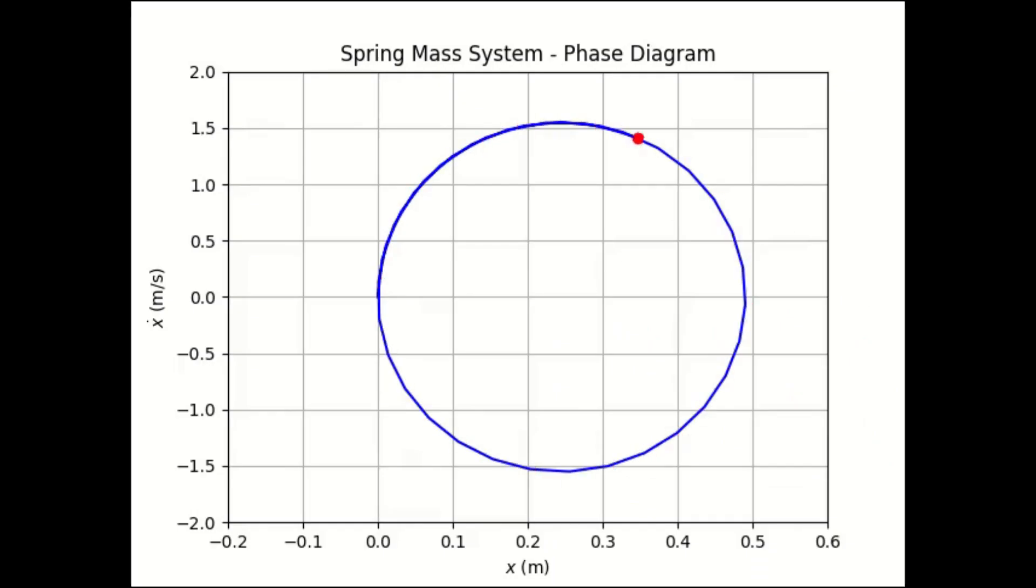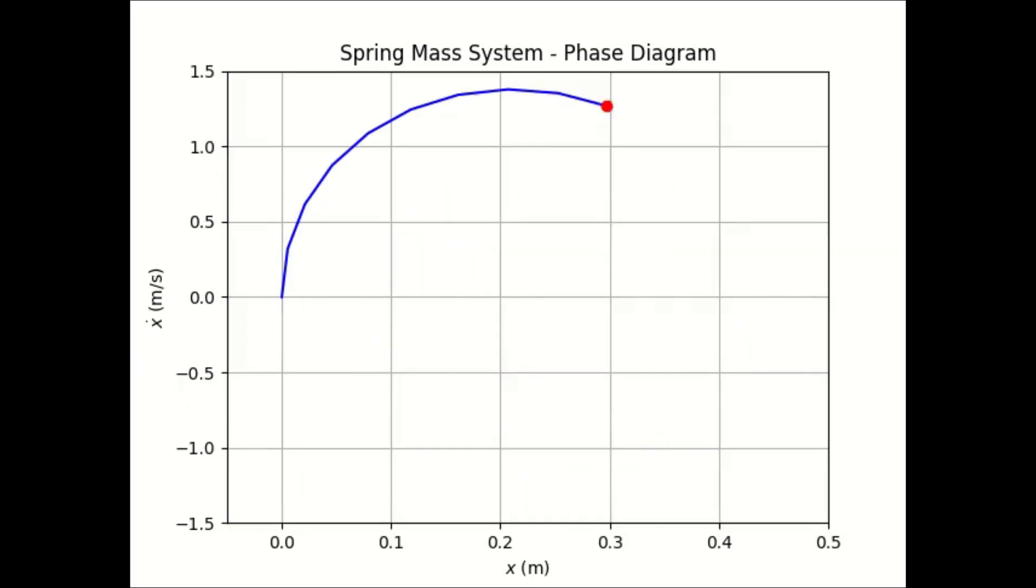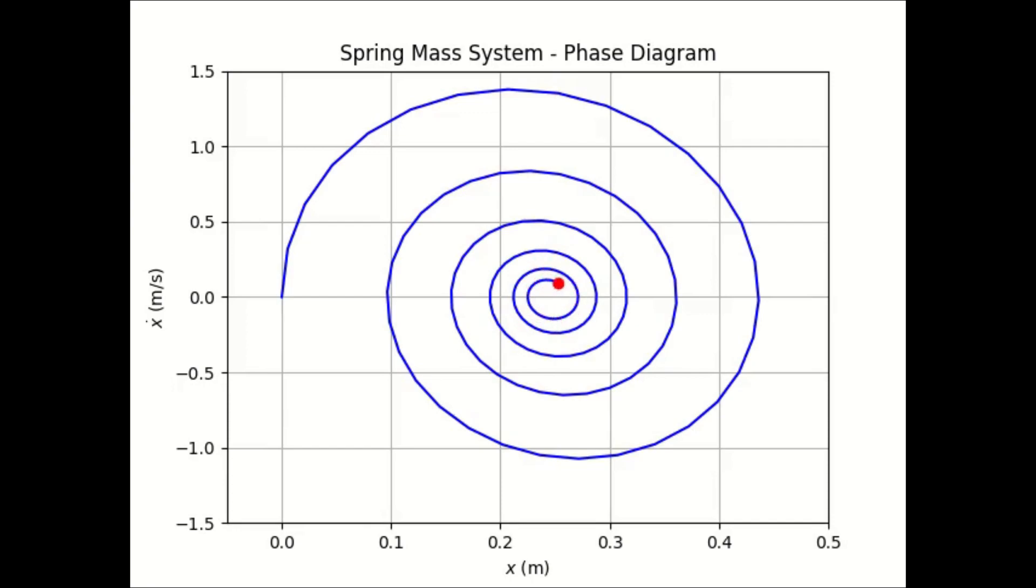Now let's look at a phase diagram of our system. We have position on the x-axis and velocity on the y-axis. We see that the phase diagram is a loop, so the system does not lose any energy. Let's compare this to a spring with friction. Now the phase diagram spirals into what is sometimes called a spiral point or a center. Time out. How do we add friction to a model? Let's go back and see.